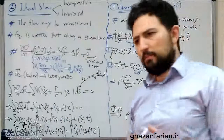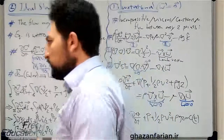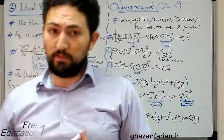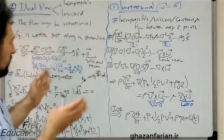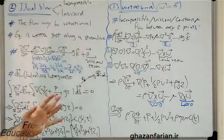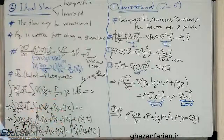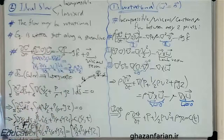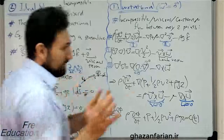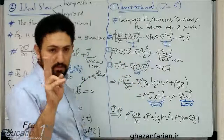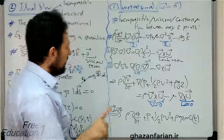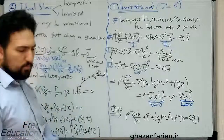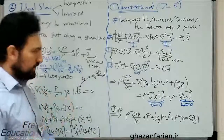Bernoulli's equation can also be written between two points located on a specific streamline. However, this version of the equation can be written between any two arbitrary points located anywhere in the flow field — we don't need the restriction of two points on a streamline here.